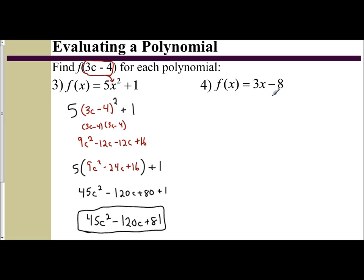f of x equals 3x minus 8. Find f of 3c minus 4. We want to take the 3c minus 4 and plug it in for our x. So we have 3 times x, so I'm going to put in times 3c minus 4 minus 8.